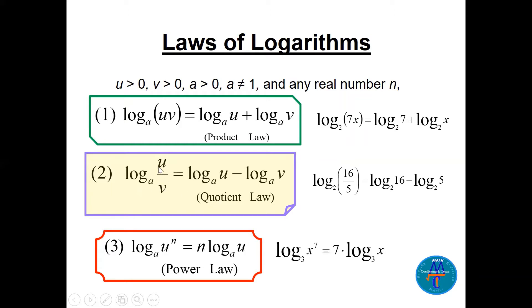Here we have log base a of u over v — this is a quotient, meaning division in the argument — so it changes to subtraction of two logs with the same base a. This is the quotient law. The last one is the power law: we have log base a of u to the power n, and the power n comes down.